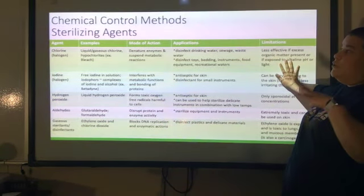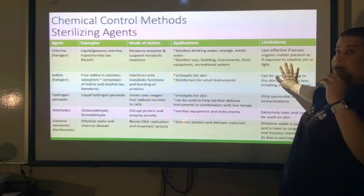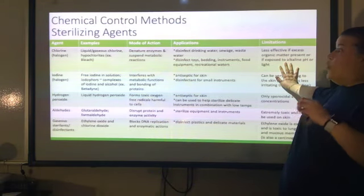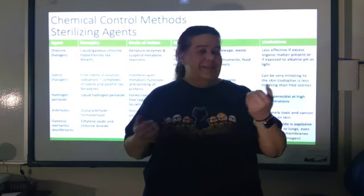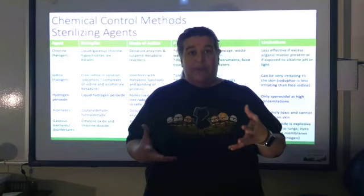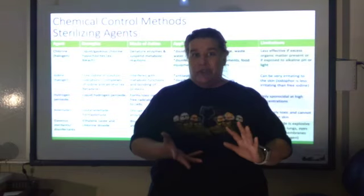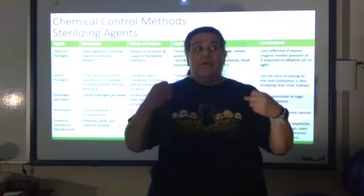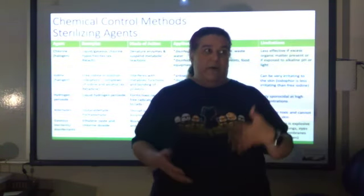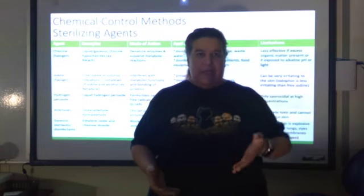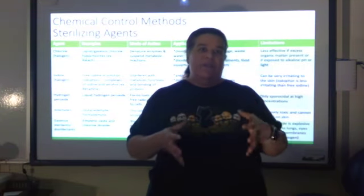The limitation with chlorine is that it is less effective if excess organic matter is present, or if exposed to an alkaline or basic pH, or light. The bottle for bleach is a solid white color — not clear — because exposure to overhead light or sunlight actually denatures the chlorine and breaks it up. We put it in solid white bottles so that it lasts longer, giving it a longer shelf life.